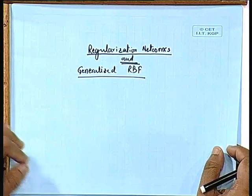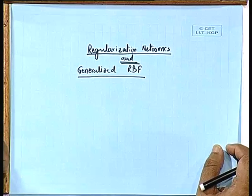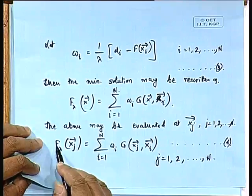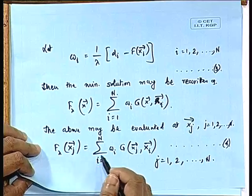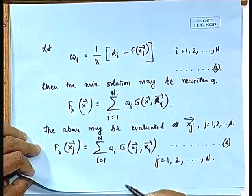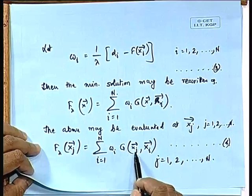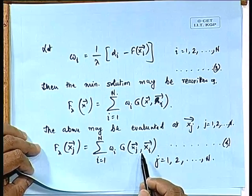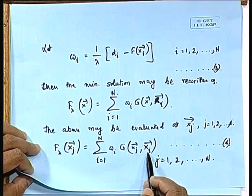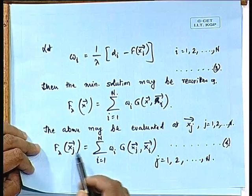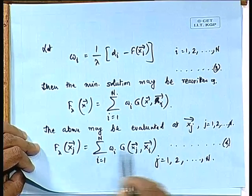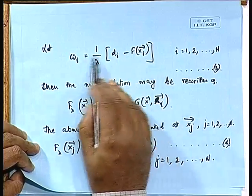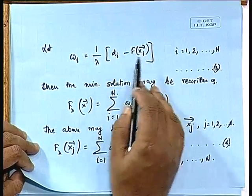You remember that in the last lecture, when we were discussing regularization, the final solution we had presented was of this nature. Let us concentrate on equation 4: the function f_lambda of x_j, where x_j is the input vector, is expressed as a summation of w_i times g(x_j, x_i), where g happens to be a Green's function centered around x_i.